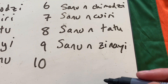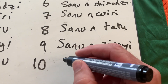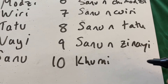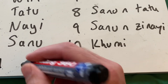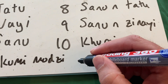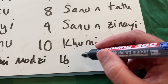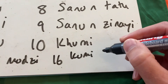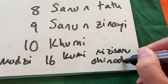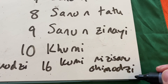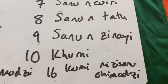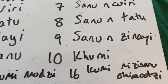What about ten? Ten is kumi, so ten has its own word. That can make us think about what happens after. Number eleven would be kumi amōzi, which is ten and one. And sixteen is kumi zi sānu chimozi, so ten and five and one. And then twenty is makumi awiri, two lots of ten. And a hundred is chikwi chimozi, one lot of a hundred.